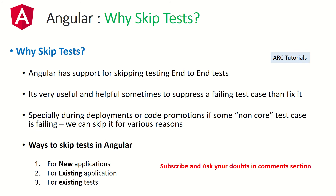Now let's talk about today's focus topic: how to skip tests and why. Angular has support for skipping tests, and sometimes it's very useful for suppressing a failing test case. For example, if a test case is continuously failing and we can't figure out the fix, but we urgently need to deploy — and that particular test case is non-core — we can temporarily skip it so the build passes. Also in unit testing, when working in a large team where everyone is pushing code, you need to focus on writing your own tests, not fixing everybody else's failing tests.